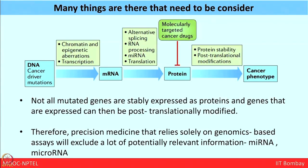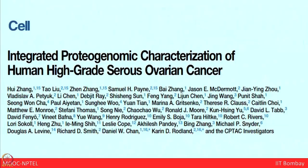We now understand that we did not consider a lot of things between genomics and precision medicine — not all mutated genes are stably expressed as proteins, and genes that are expressed can be post-translationally modified. Therefore, precision medicine that relies solely on genomic-based assays will exclude a lot of potentially relevant information like miRNA and microRNA. To support this and give a complete glimpse of how the powerful tool of proteogenomics can be very helpful to solve different kinds of cancer.